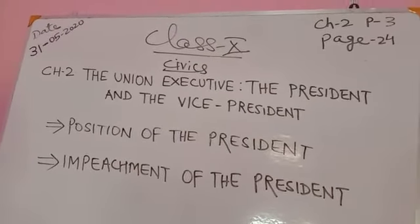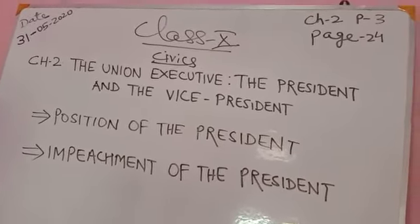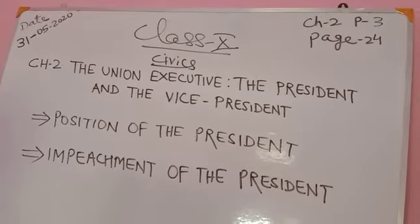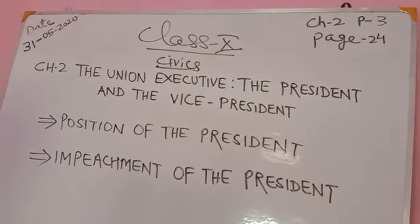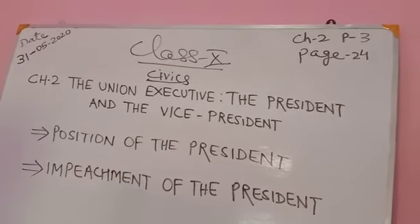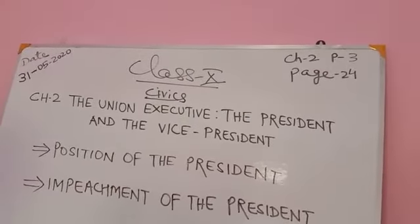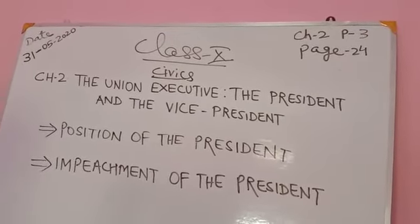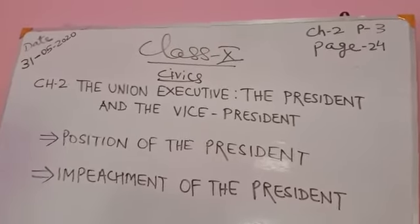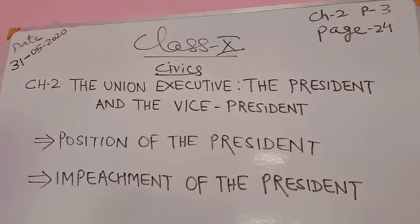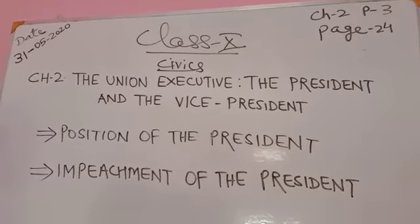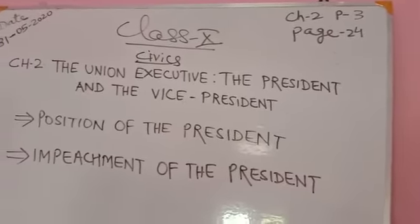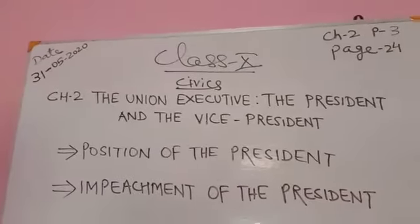When there is a coalition government and no single party has a clear-cut majority, two or more parties can combine to achieve the majority. That is the position of a coalition government. In such situations, there are many leaders with ambitions to become the next prime minister, and the president exercises discretion in choosing one.